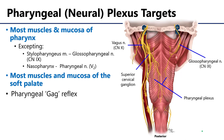Now that we have reviewed the inputs of the plexus, let's take a look at some of the targets and how they're affected. The pharyngeal plexus innervates more than just the pharynx. The pharyngeal neural plexus innervates most of the muscles of the pharynx as well as the mucosa, with the largest exception being the innervation of the stylopharyngeus muscle.